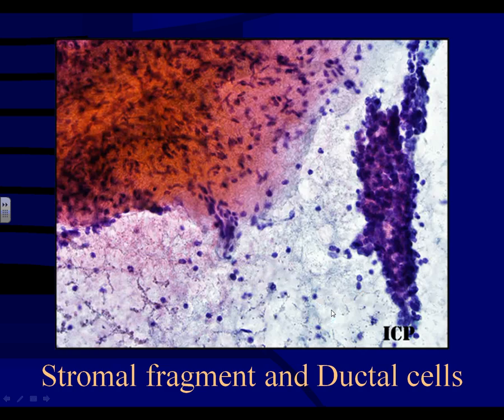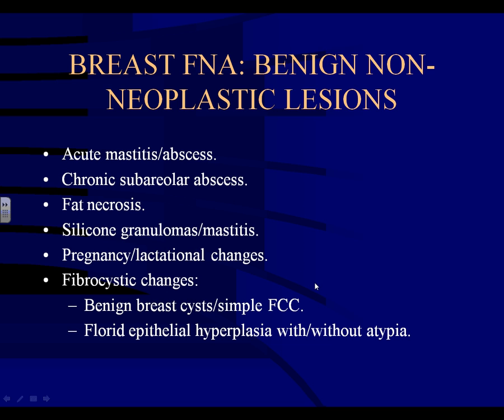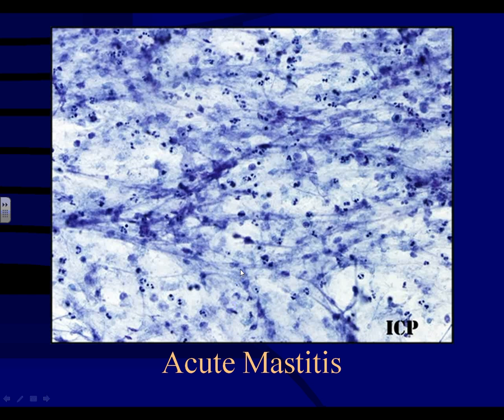Those are the general cytologic features of the cellular components expected in breast FNA cytology. Now let's look at individual lesions, beginning with the benign non-neoplastic conditions. With acute mastitis, you're going to see abundant acute inflammatory cells, abundant background necrotic debris, sometimes some capillaries because of increased vascularity. The most common organisms are Staph and Strep. You may want to get a sample for culture.